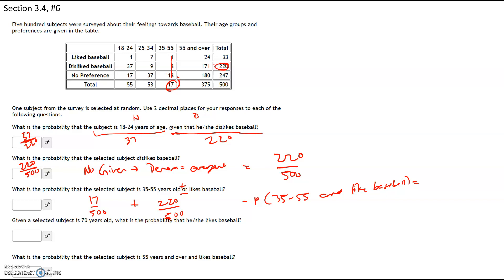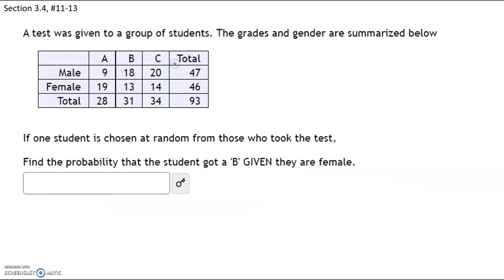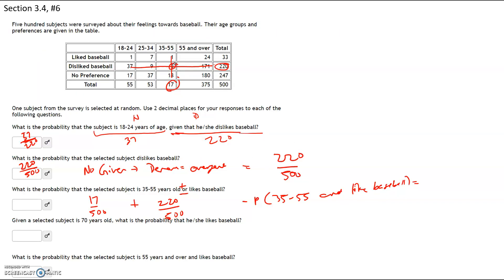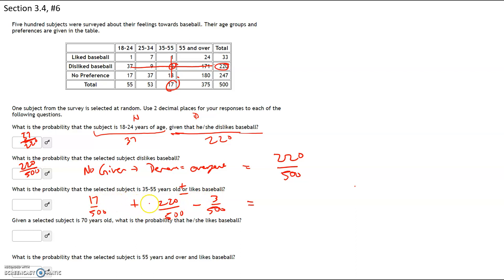That 3 got double counted — it was counted once with the people who are 35 to 55 and once with the people who dislike baseball. So we have to subtract off those 3 people out of 500. When you add or subtract fractions the denominator stays the same, so we add the numerators: 17 plus 220 minus 3, which gives you 234 out of 500.